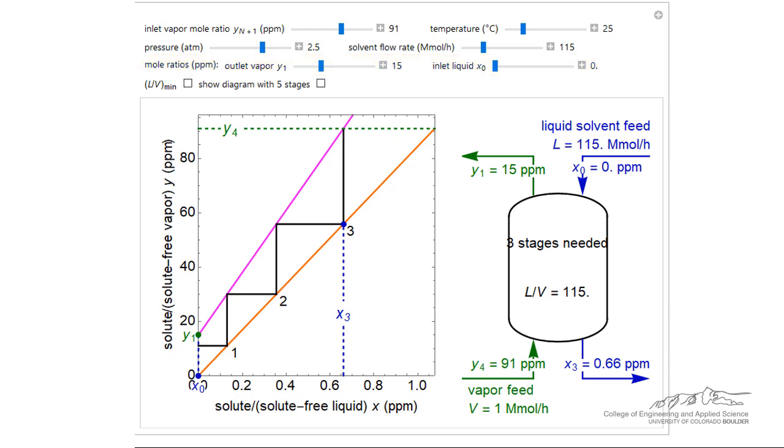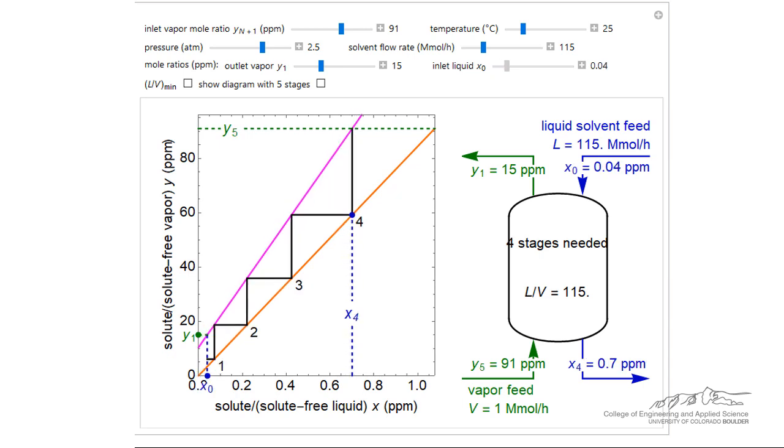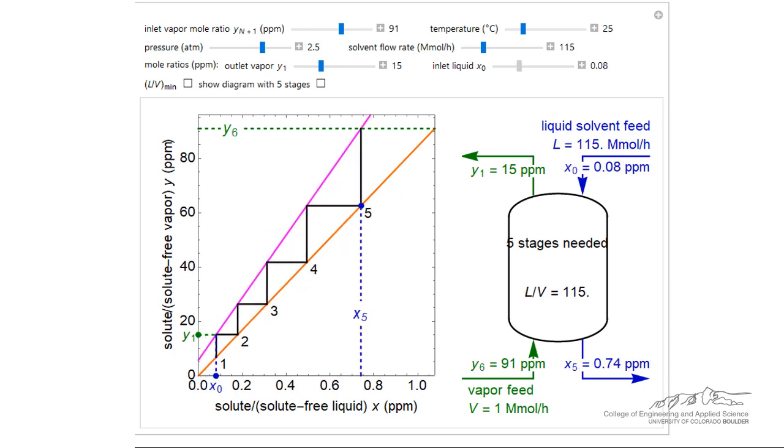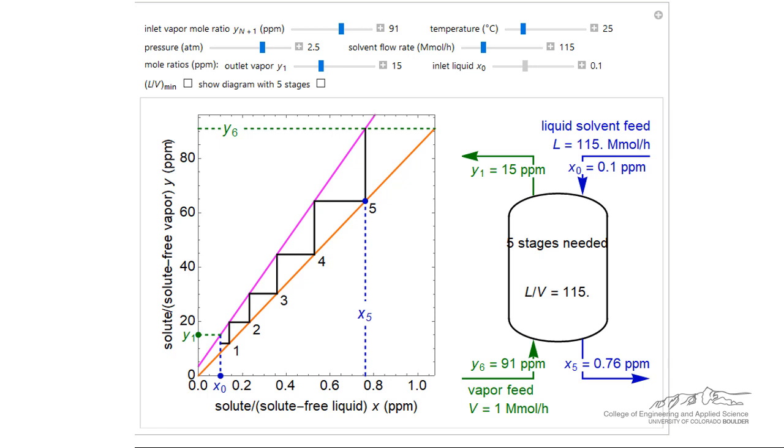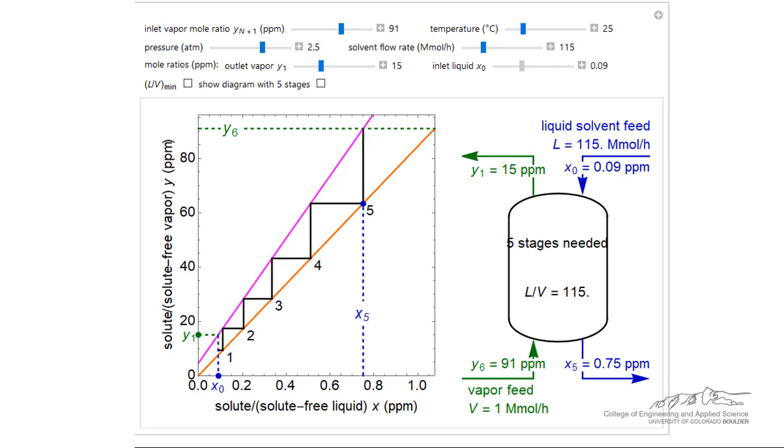The dynamic simulation allows us to investigate how changing the inlet and outlet compositions changes the absorption process. Initially, we assumed the incoming solvent had no solute. If you use a process in which the solvent is recycled, it may enter with a small amount of solute present. As the inlet liquid concentration is varied, note the impact on the operating line, the number of stages, and the outlet liquid concentration.